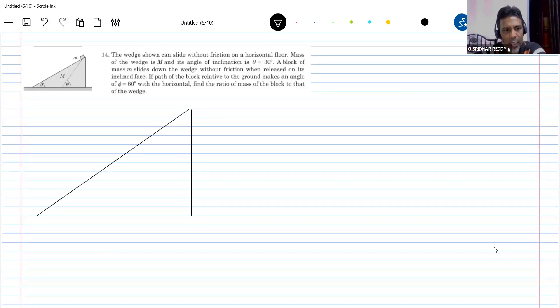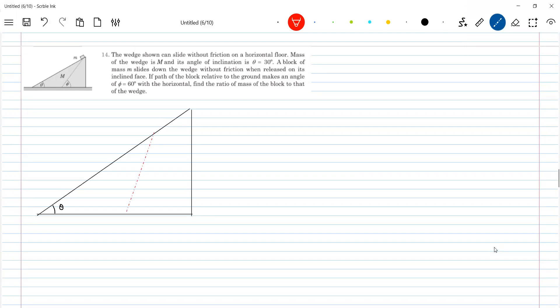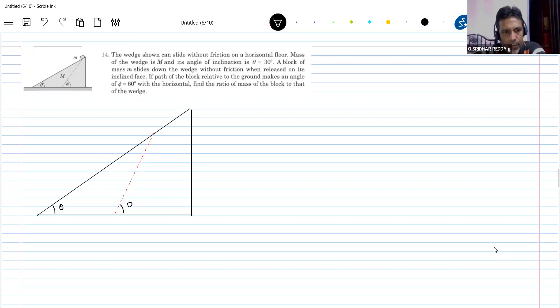You can solve this by very lengthy method or by an easy method. This will be theta, this will be phi, this is the block and I will write M1, M2 so that it will be easy for me. Now I am just changing the symbols for our convenience: small m is M1, capital M is M2.